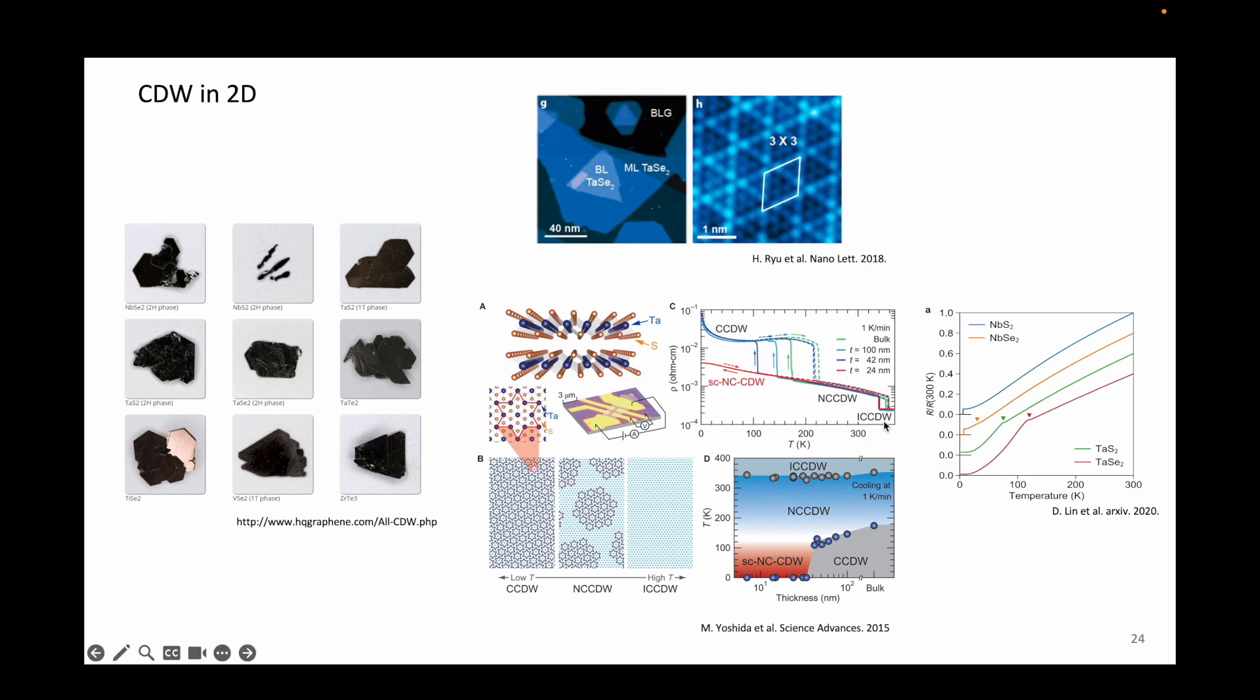These transitions can be seen quite readily in R vs T measurements in this material as each transition is associated with an enormous change in resistance and some hysteresis in the temperature cycles.